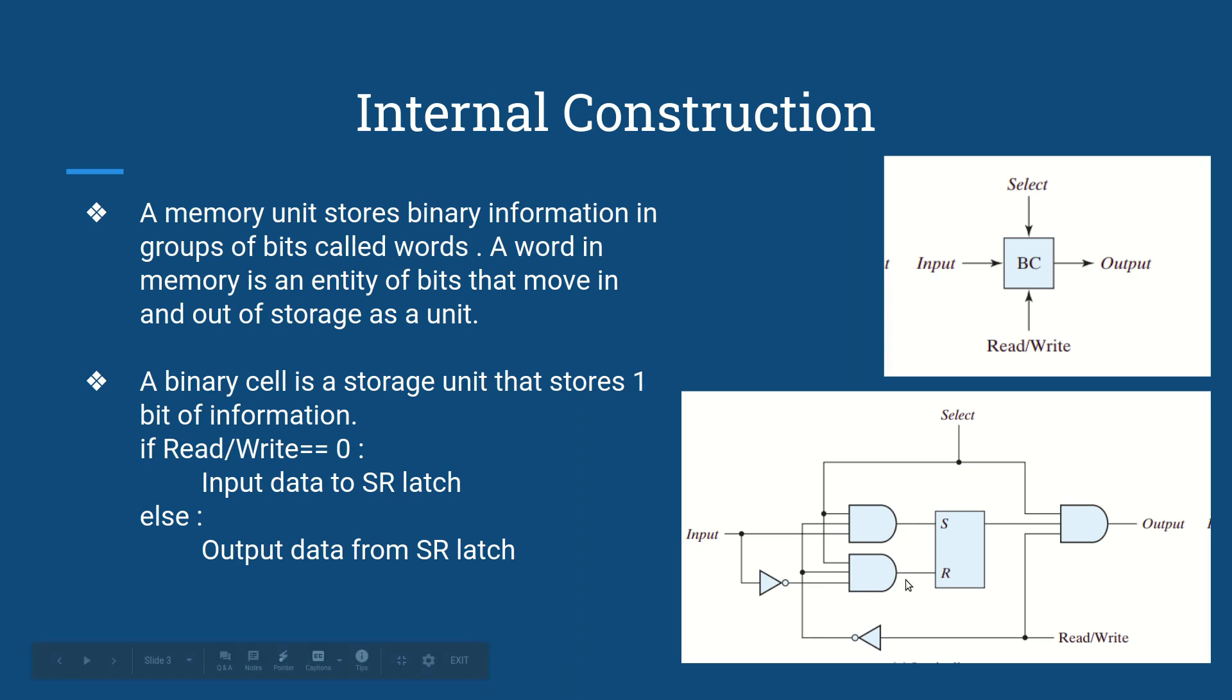This is only true when select is 1. Obviously if select is 0, then we won't be able to use this binary cell, because if select is 0, then the result of both of these AND gates will be 0, meaning we won't get any input. If select is 0, the AND gate on the output will give us output 0, which means we won't be able to use it.